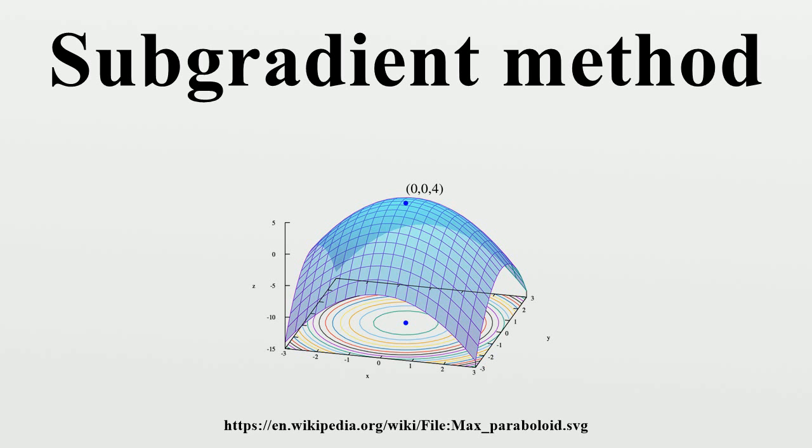If f is differentiable, then its only subgradient is the gradient vector itself. It may happen that g is not a descent direction for f. We therefore maintain a list that keeps track of the lowest objective function value found so far, which is a resultant convex-optimized step-size rule.